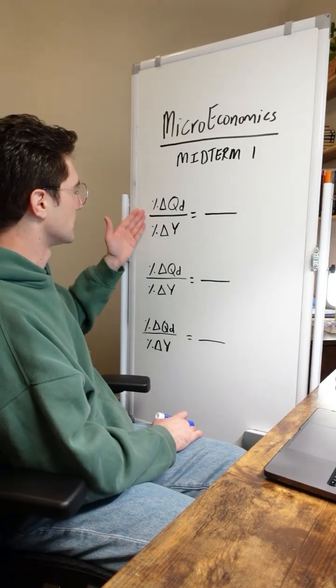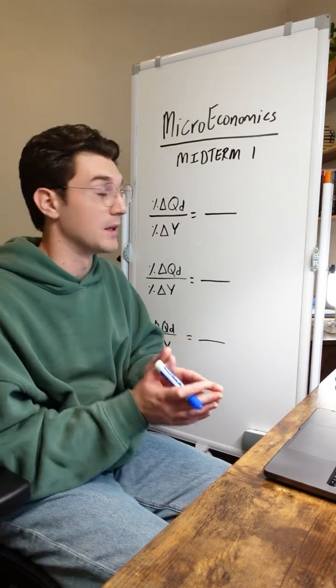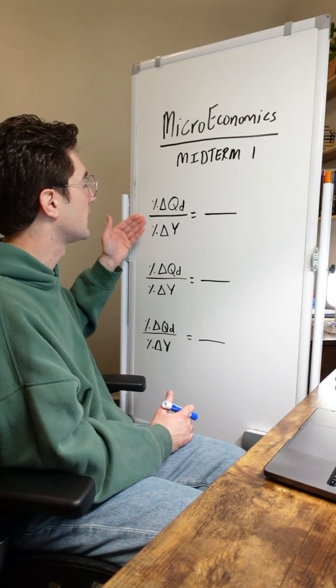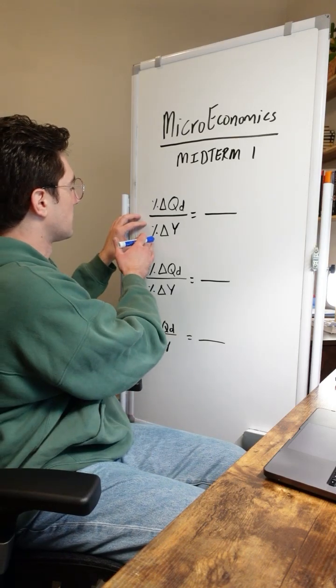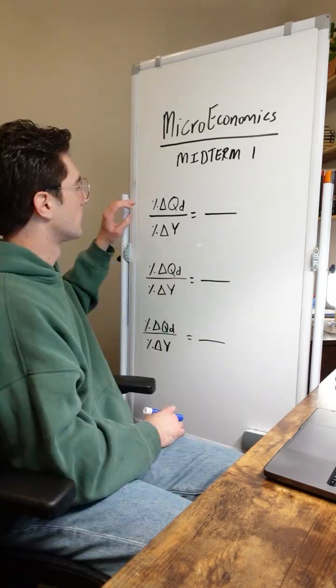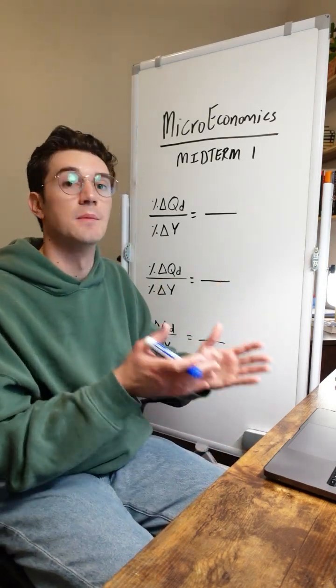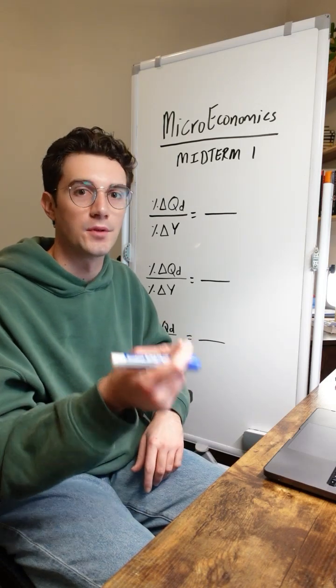With that being said, the first thing I want to make sure we understand is this formula. The only difference from the price elasticity of demand formula is the denominator. Instead of this being percent change in price of the good, it's percent change in income of the consumers. We're assessing a good's income elasticity of demand. In other words, when income changes, how does the quantity demanded of the good change?